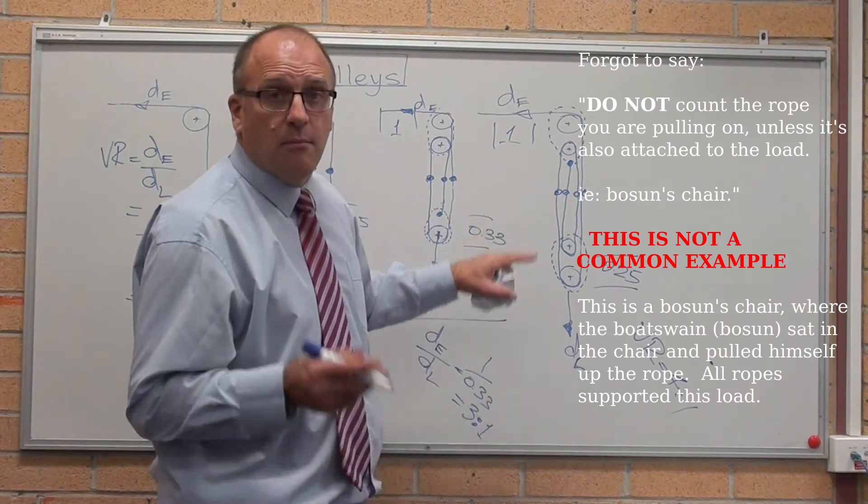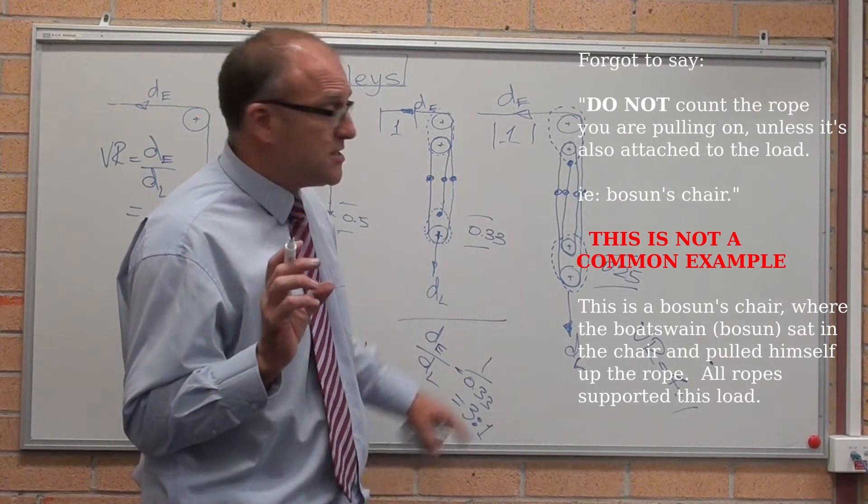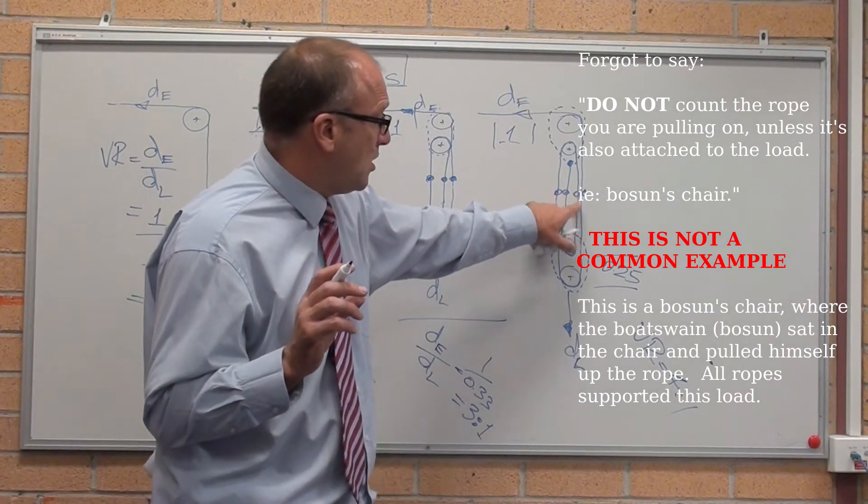For a pulley system to get the velocity ratio, count the number of ropes that are holding up the load.